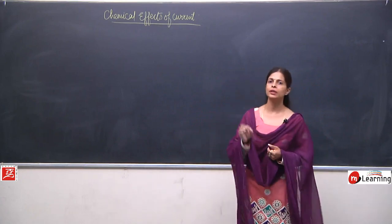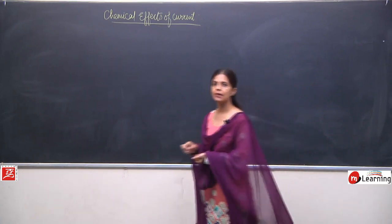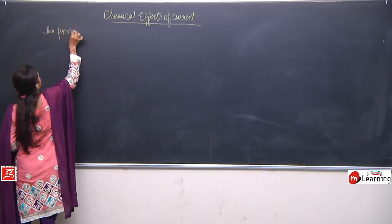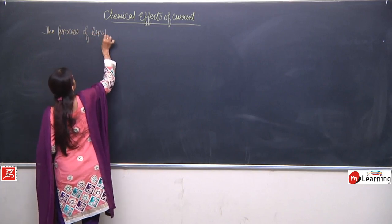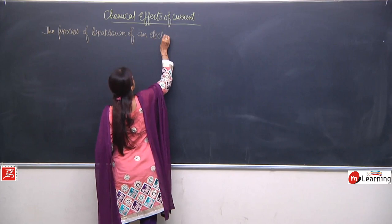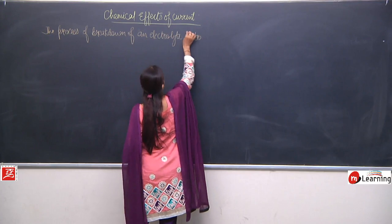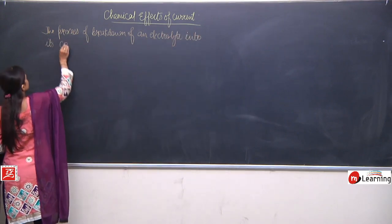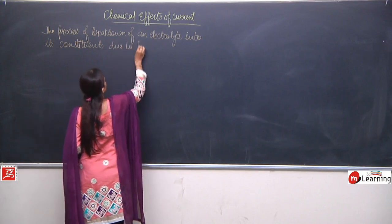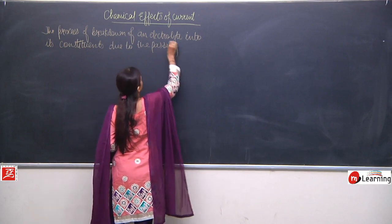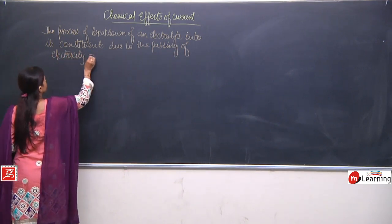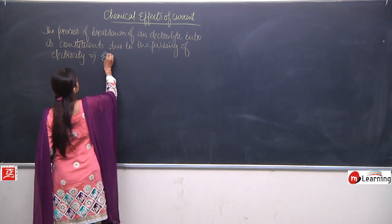Now we know the meaning of the word electrolysis, but now we will start from the definition of electrolysis. The process of breaking down of an electrolyte into its constituents due to the passing of electricity — this process is known as electrolysis.